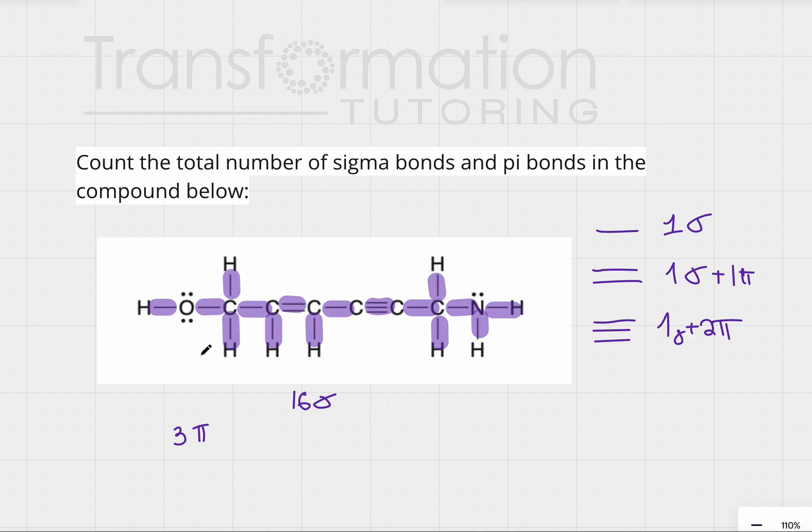So this molecule has sixteen sigma bonds and three pi bonds. What are you working in your chemistry class right now? Let me know in the comments below.